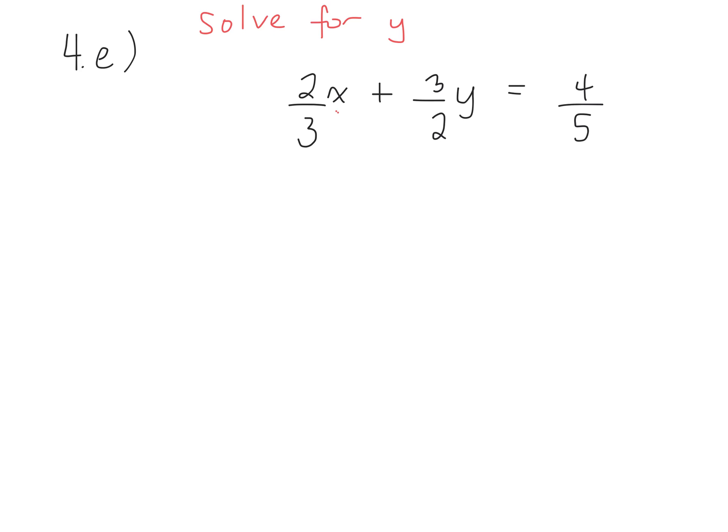So raise your hand when you can tell me what the first step would be here. What's the first term we want to eliminate from the left side of our equation? 2 over 3x. Good, 2 over 3x. How do I get rid of that?